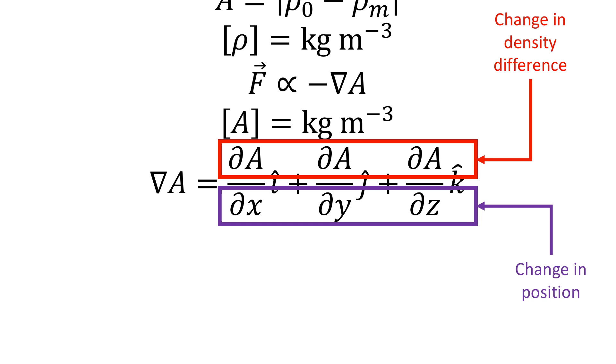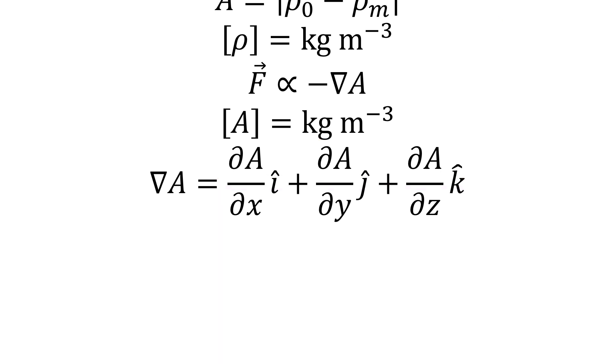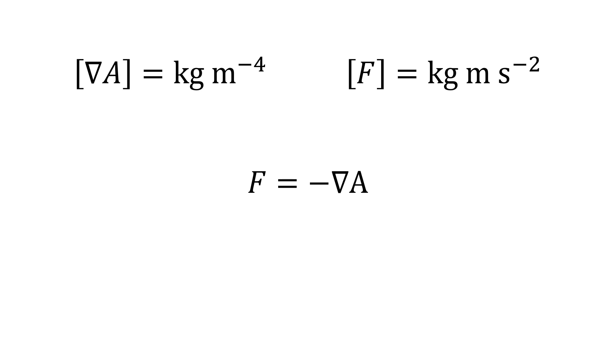So this is a change in density difference divided by a change in position. So from dimensional analysis we find that the gradient of A has units of kilograms divided by meters to the fourth power.